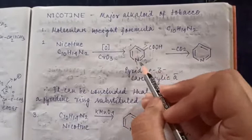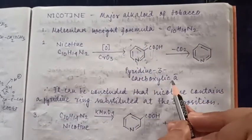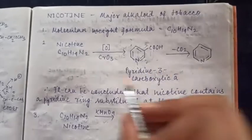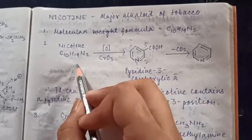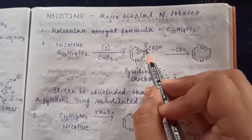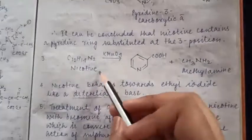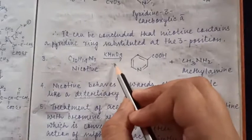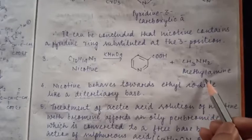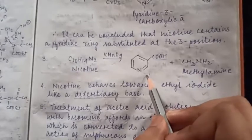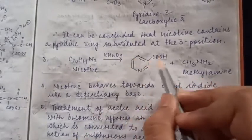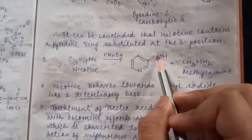Out of those fragments, one of the important fragments is pyridine-3-carboxylic acid, which upon decarboxylation yields pyridine. So from this reaction it is concluded that nicotine obviously will contain a pyridine ring which will be substituted at 3 position. It is also seen that nicotine upon oxidation with KMnO4 forms the same compound pyridine-3-carboxylic acid and additional compound methylamine. So from this reaction also we can conclude that nicotine obviously will contain a pyridine ring which is substituted at 3 position.